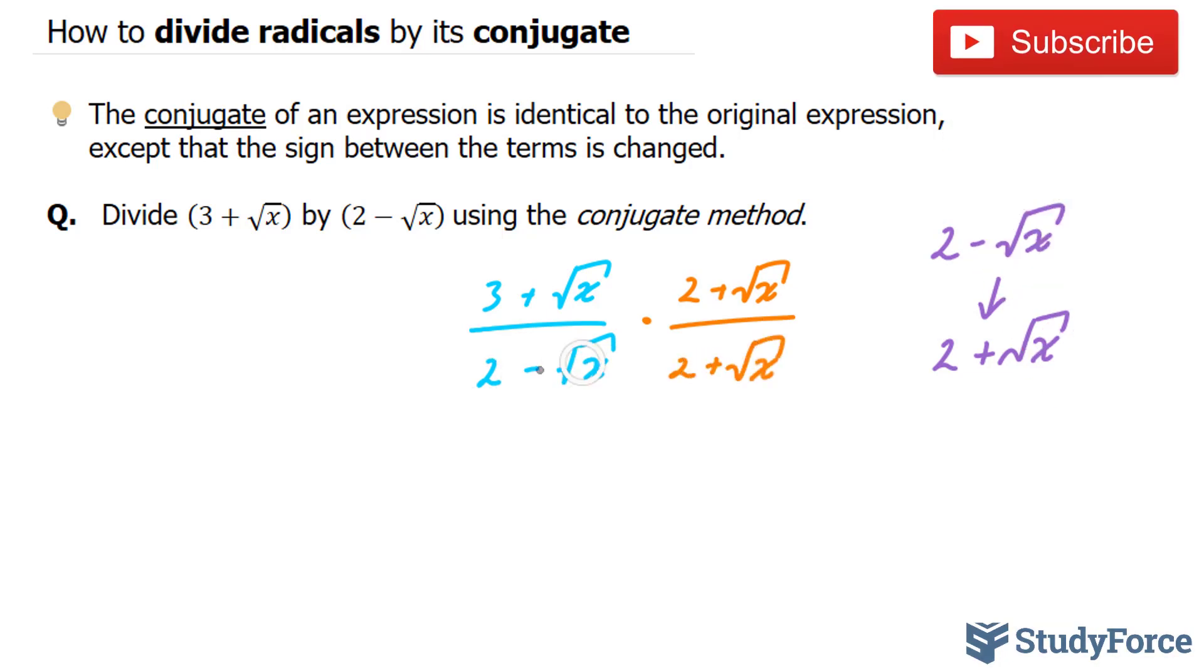We have a binomial times a binomial. Let's see what happens when we multiply them. 2 minus the square root of x—this is the denominator. We'll focus on the numerator next.